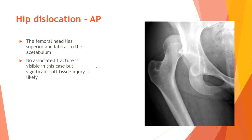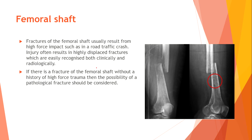Hip dislocation — the femoral head lies superior and lateral to the acetabulum. No associated fracture is visible in this case, but significant soft tissue injury is likely. Femoral shaft fracture usually results from high force impacts such as in a road traffic crash, resulting in a highly displaced fracture easily recognized clinically and radiologically. If there is a femoral shaft fracture without history of high force trauma, then a pathological fracture should be considered — causes include metastasis, osteomyelitis, or osteoporosis.